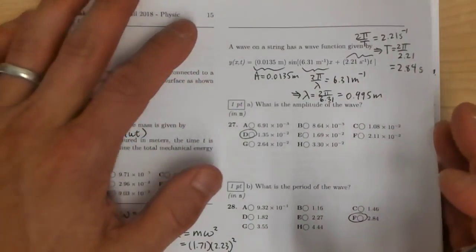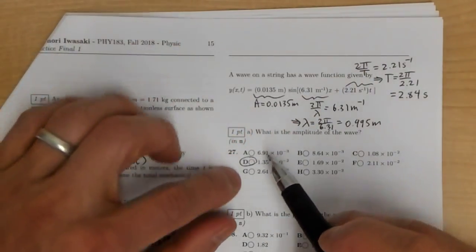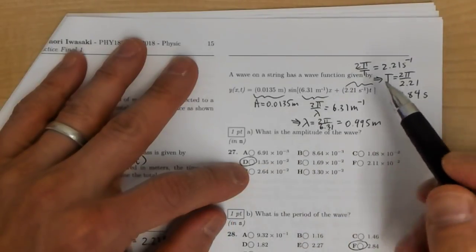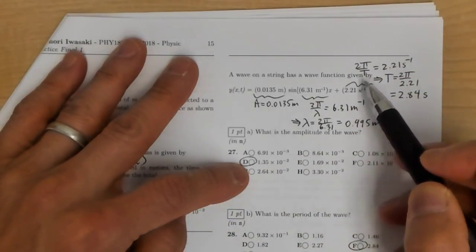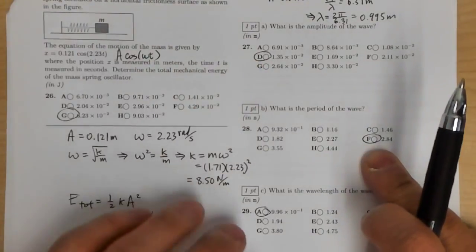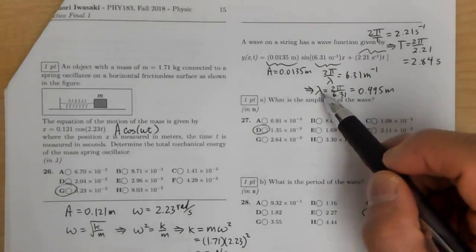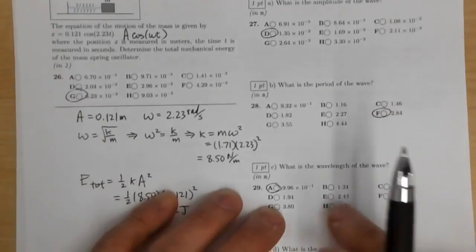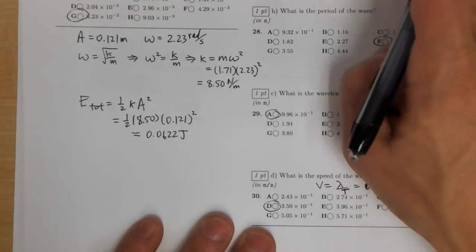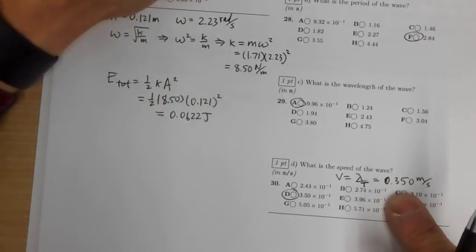For a wave on a string, we read off the parameters directly. The amplitude is 1.35 (the first coefficient). The angular frequency is 2.21 rad/s, so the period T = 2π/2.21 = 2.84 seconds. The wave number is 6.31 rad/m, so the wavelength λ = 2π/6.31 = 0.995 m. The wave speed is λ/T = 0.995/2.84 = 0.350 m/s.